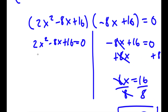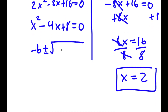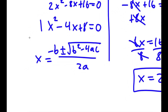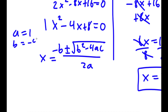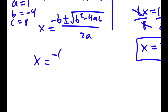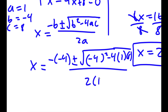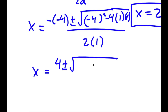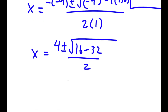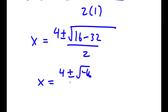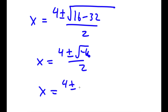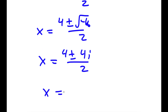For 2x squared minus 8x plus 16, I factor out 2 to get x squared minus 4x plus 8 equals 0. Using the quadratic formula with a equals 1, b equals negative 4, and c equals 8: x equals (4 plus or minus the square root of negative 4 squared minus 4 times 1 times 8) over 2. This equals 4 plus or minus the square root of 16 minus 32 over 2, which equals 4 plus or minus the square root of negative 16 over 2, which equals 4 plus or minus 4i over 2, giving x equals 2 plus or minus 2i.